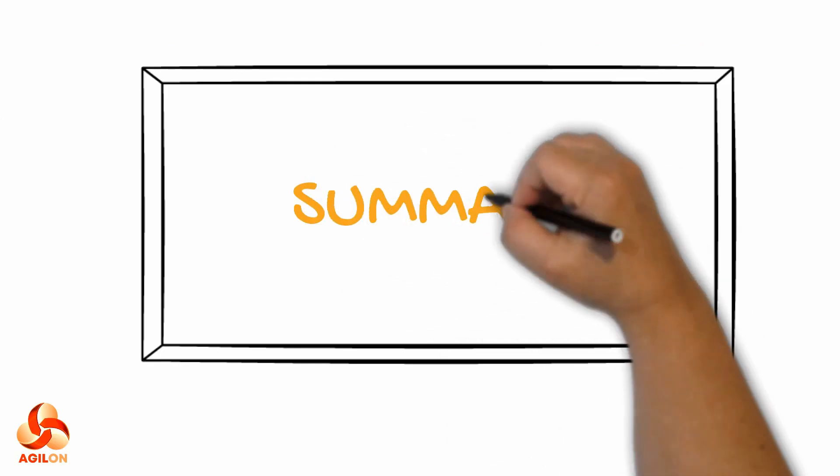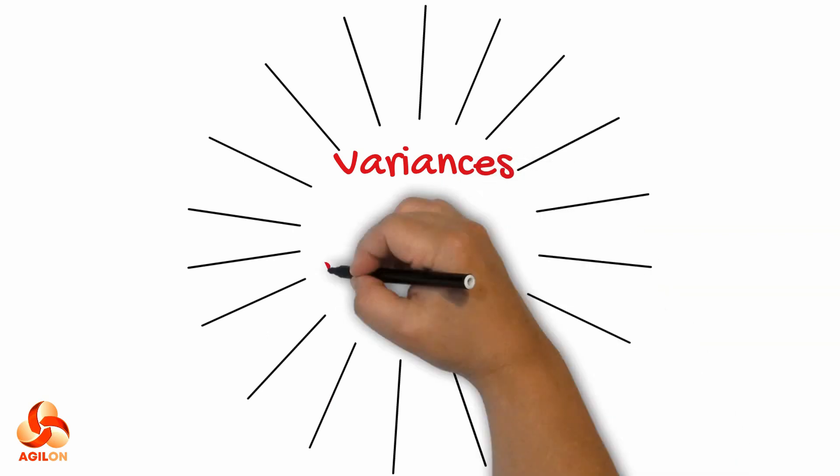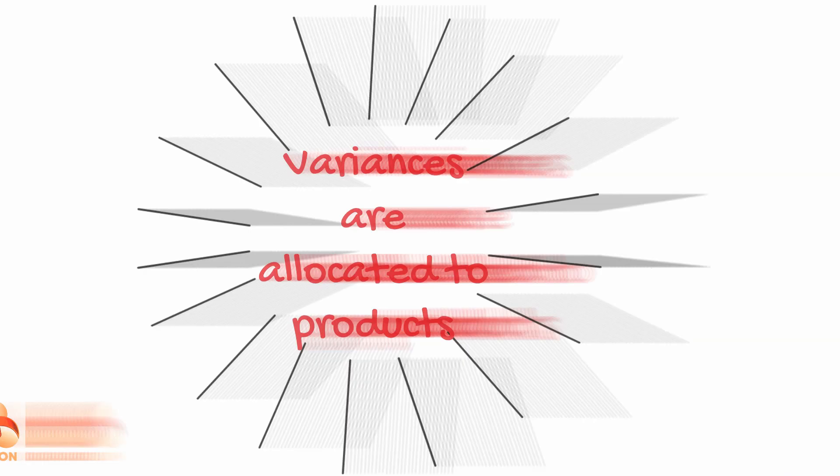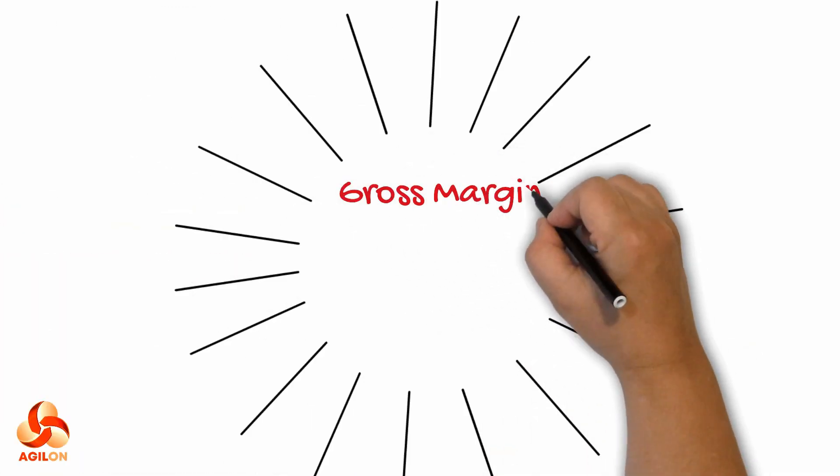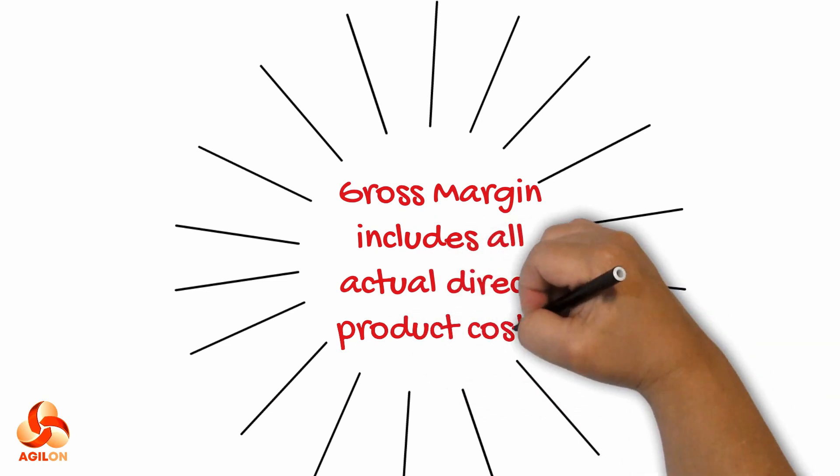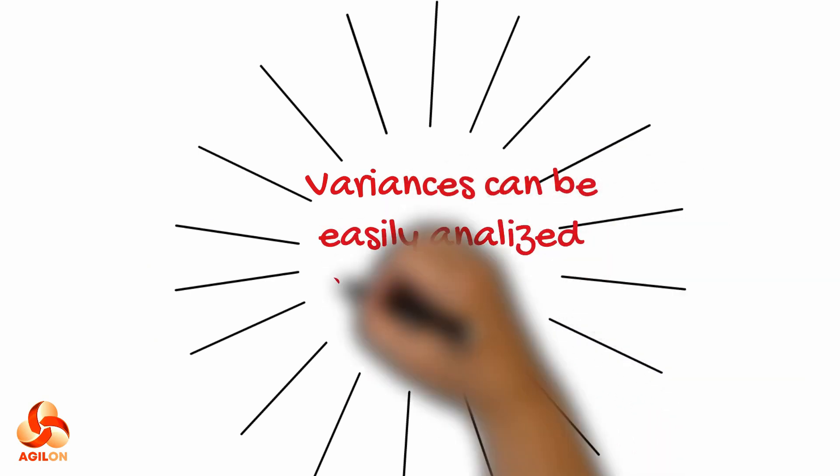Let's summarize. With material ledger actual costing, variances are allocated to products. Gross margin is inclusive of all actual direct costs. Variances can be analyzed with ease and tracked directly to the source using material ledger reports.